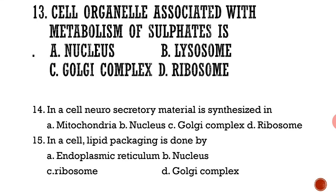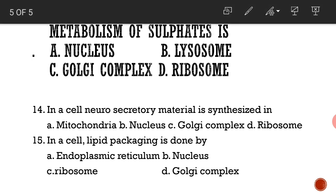The cell organelle associated with the metabolism of sulfates is the Golgi complex. In a cell, neurosecretory material is synthesized in the Golgi complex, and lipid packaging is also done by the Golgi complex.